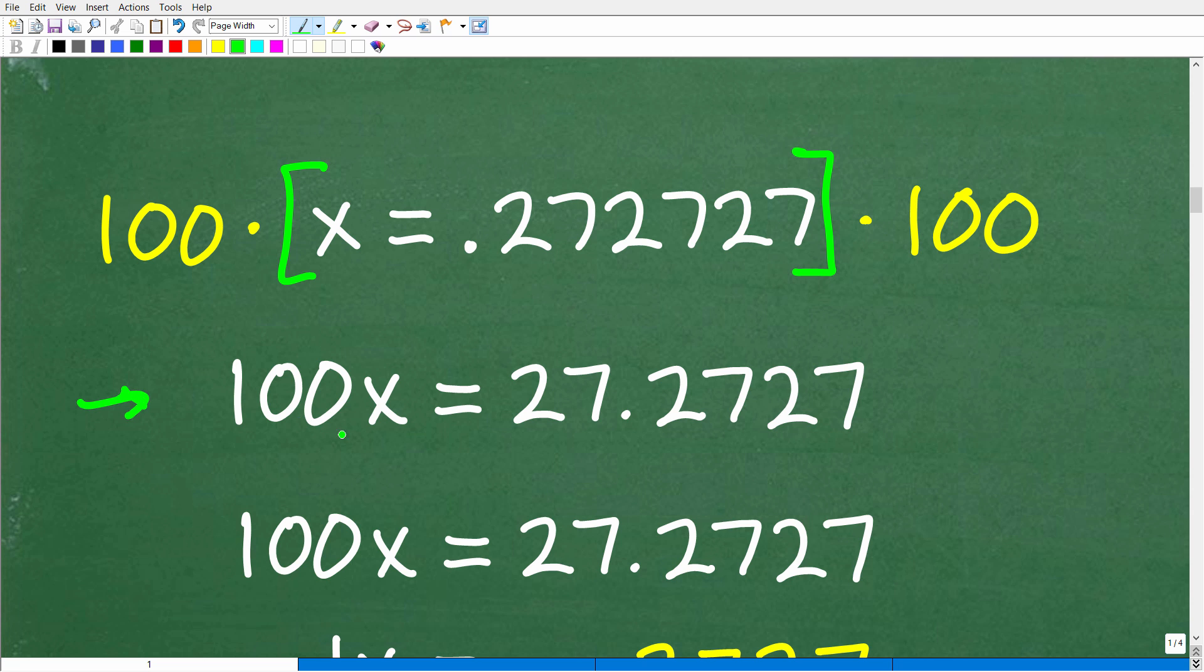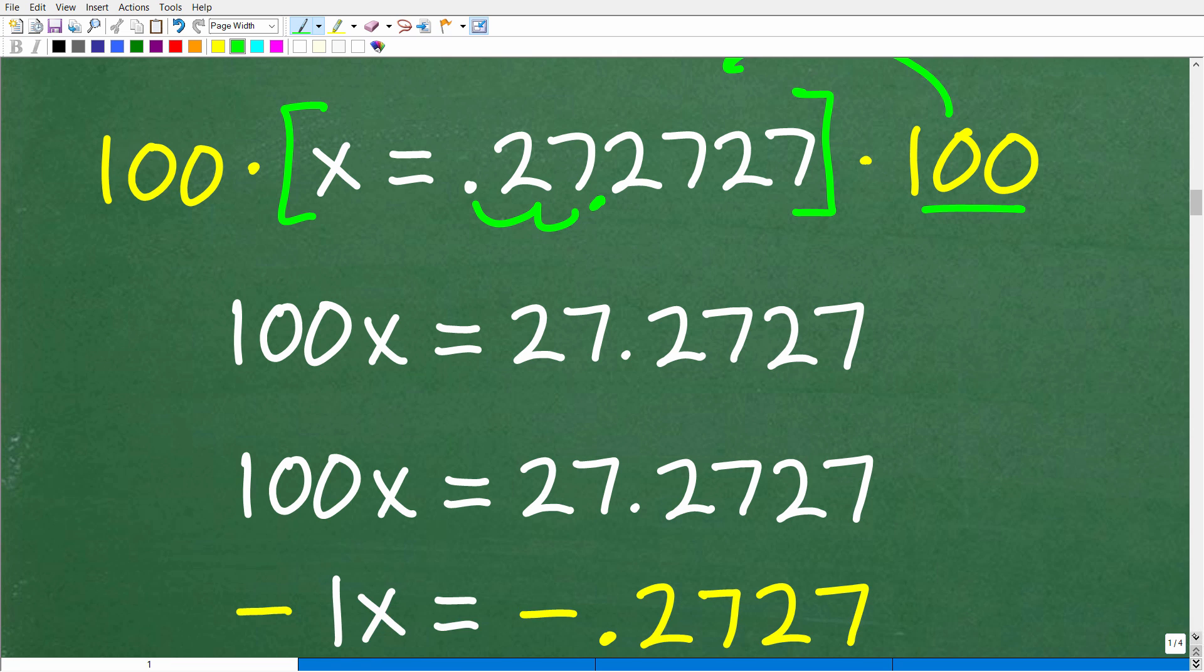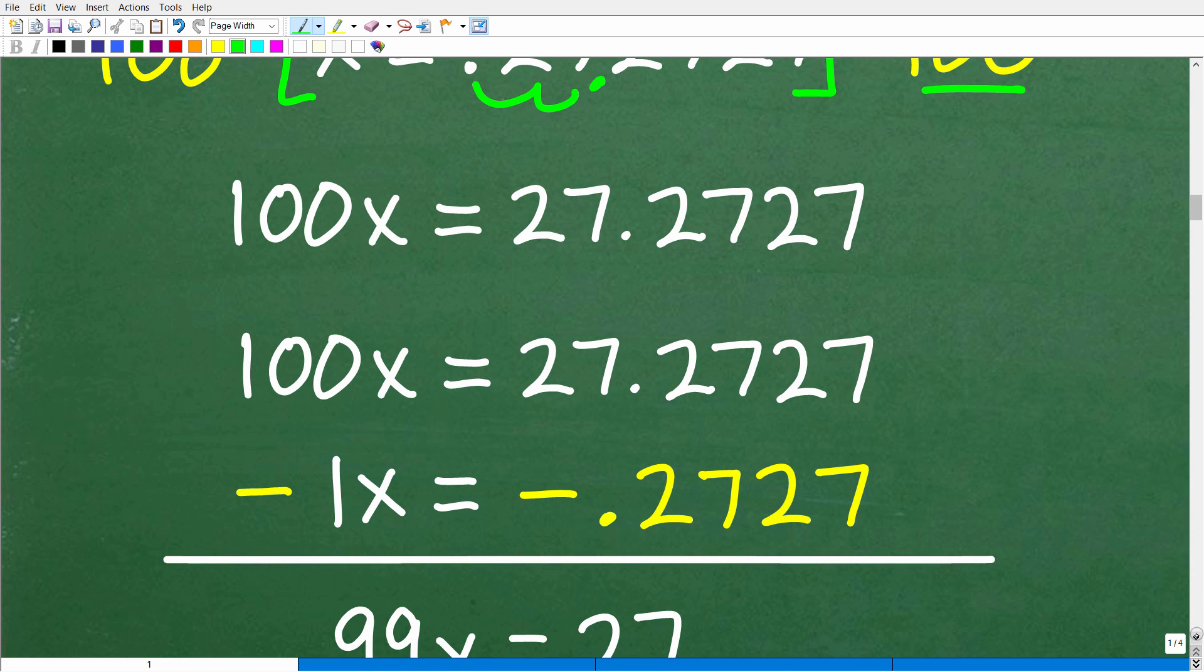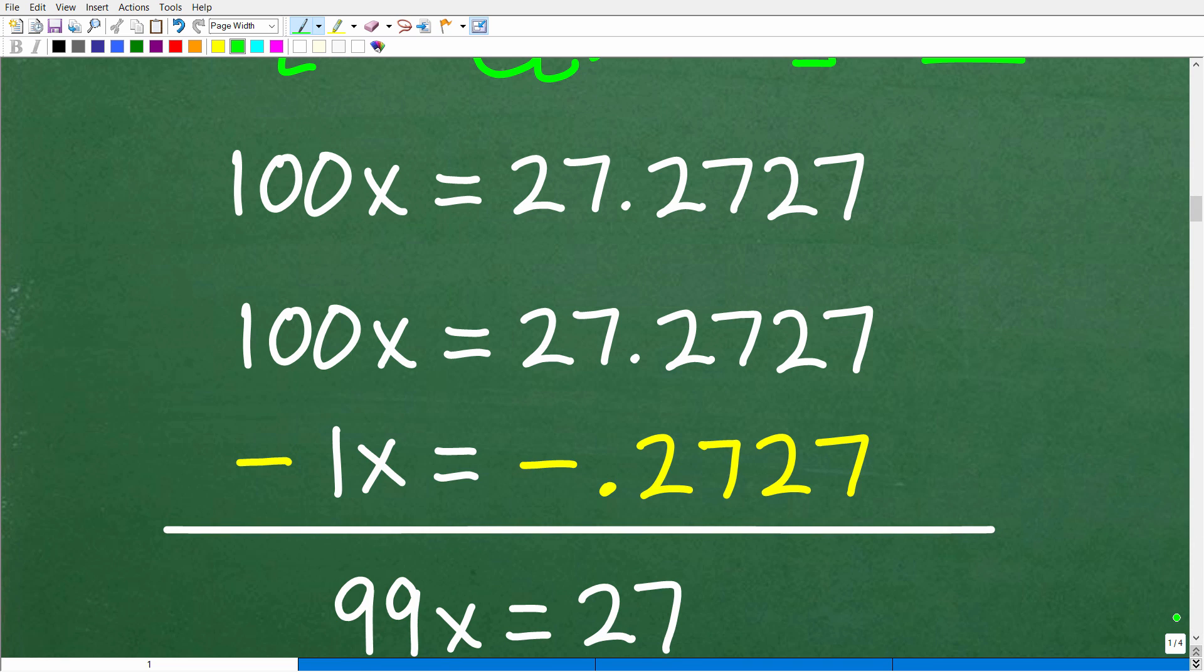So we're going to multiply both sides of the equation by 100. When we do that, we're going to get 100x is equal to 27.2727. You can see when I take this 100 and multiply by 0.2727, it's simply going to move the decimal point over two places to the right. So we have 100x is equal to 27.2727 repeating. But here I have a whole number, and this part is repeating.